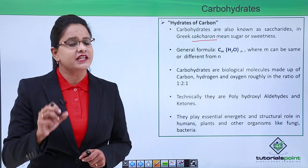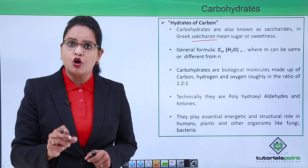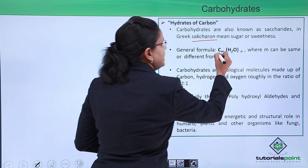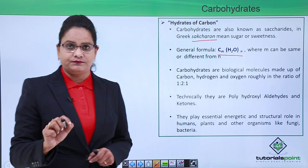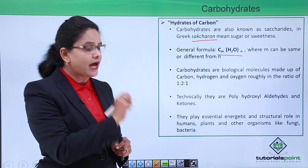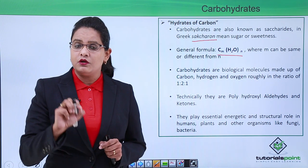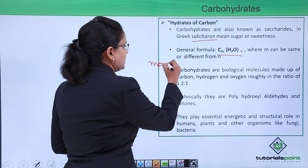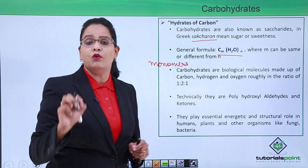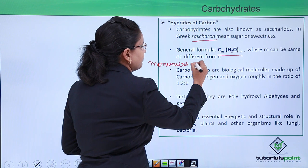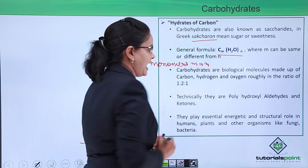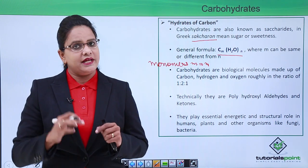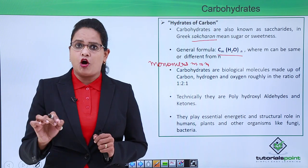Now these carbohydrates, their general formula is C_m H_2O N. Now this value of M and N can be different or the same. In case of monomers, that is monosaccharides, the M will be equal to N. And as the size of carbohydrates increases, it will be different.